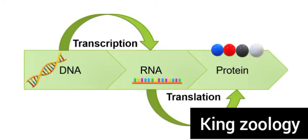Before we start, please go and subscribe. Now let's start. First of all, DNA is used to make RNA, and RNA is used to make proteins. We will see this procedure in detail.